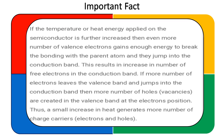If the temperature applied on the semiconductor is further increased, then even more valence electrons gain enough energy to break bonding with the parent atom and jump into the conduction band, increasing the number of free electrons. More electrons leaving the valence band means more holes are created in the lower valence band. Thus, a small increase in heat generates more charge carriers — that is, electrons and holes.